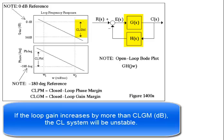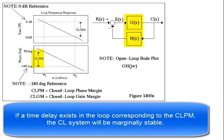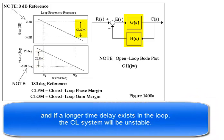If a time delay exists in the loop corresponding to the closed-loop phase margin, the closed-loop system will be marginally stable. And if a longer time delay exists in the loop, the closed-loop system will be unstable.